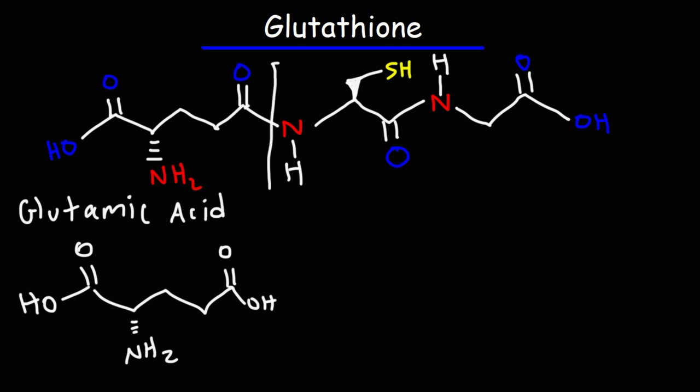The second part of glutathione comes from cysteine. We're going to add a hydrogen to the NH group and we're going to draw everything exactly the way it is. So this is cysteine.